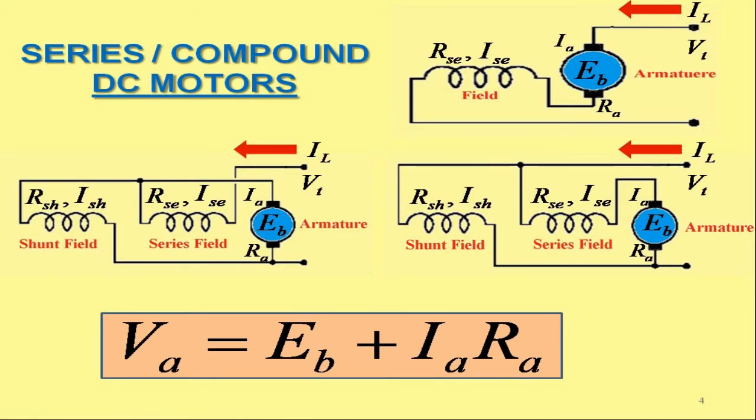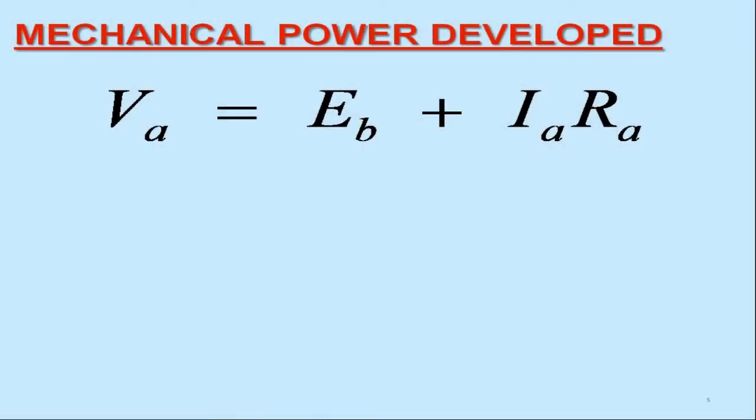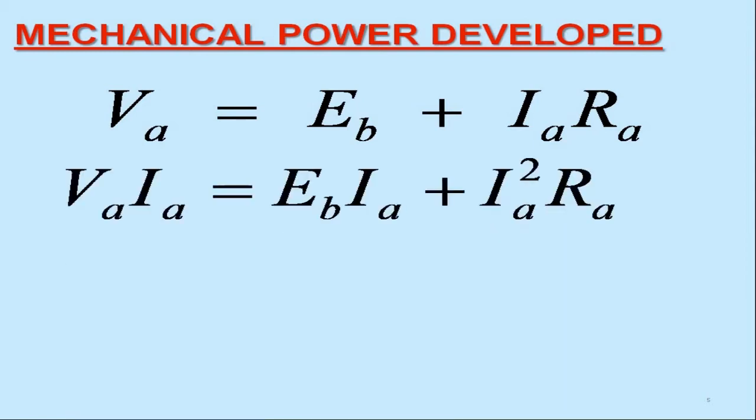Based on the previous discussions, we may now formally write the current-voltage relationship for any DC motor as Va equals Eb plus Ia Ra. Now, multiply both sides by Ia. We have Va Ia equals Eb Ia plus Ia squared Ra.